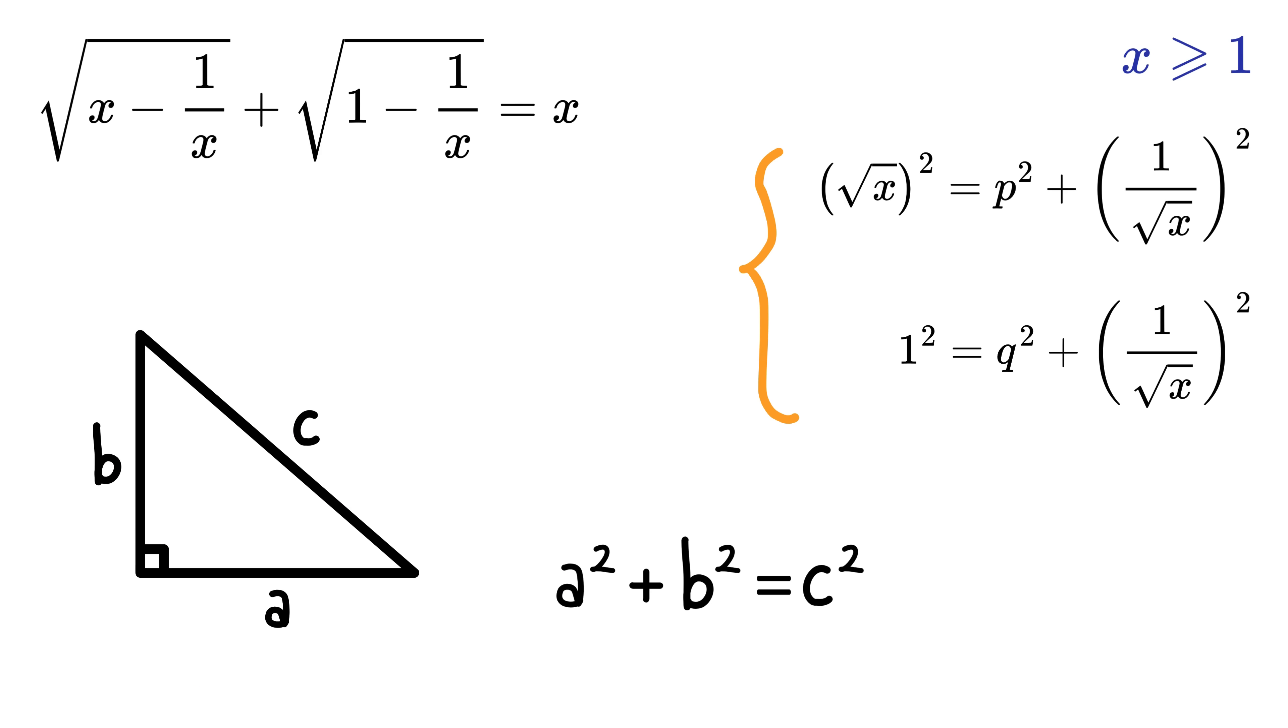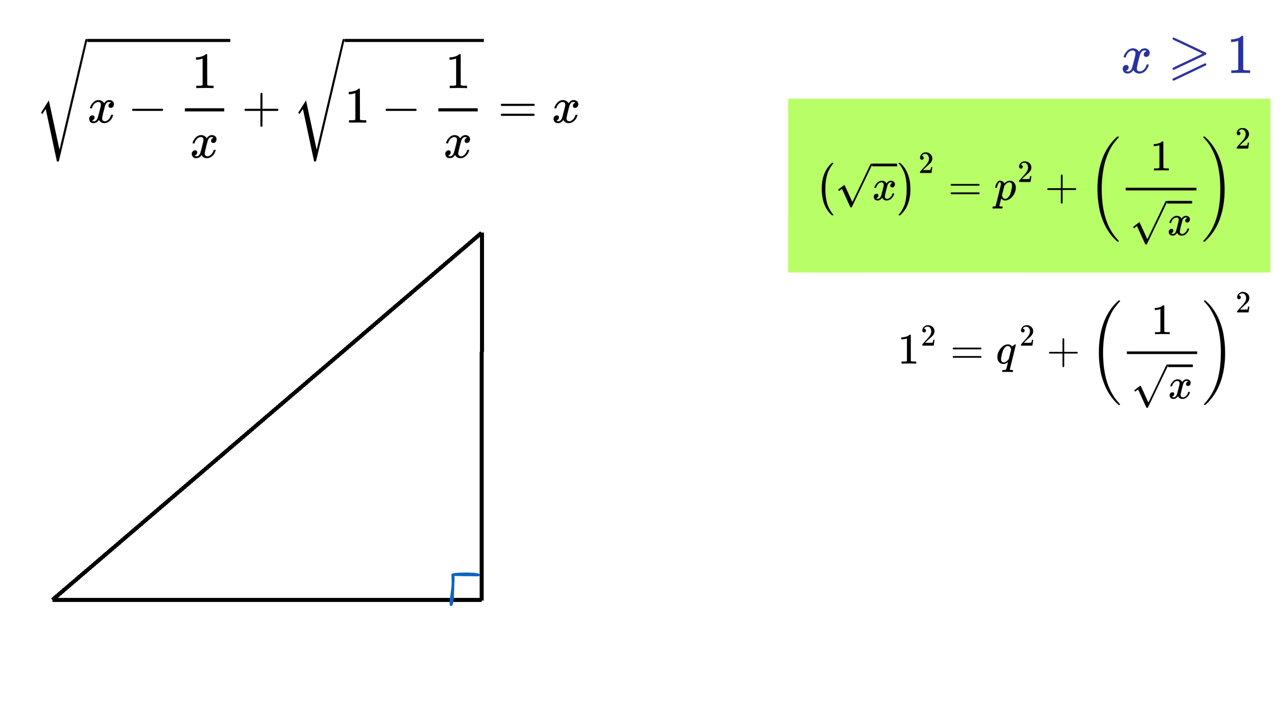Aren't both of them of the form a square plus b square equals c square, where a, b, and c forms the right-angled triangle? Make a right triangle with sides p, 1 over root x, and hypotenuse as root x. Similarly, make a right triangle with sides q, 1 over root x, and hypotenuse as 1.